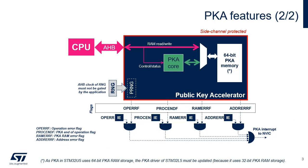PKA lightens the CPU workload by performing key operations in the PKA core using dedicated PKA memory. First, the CPU loads initial data into the PKA internal RAM, which is located at address offset 0x400. Then, in the PKA control register, the CPU specifies the operation which is to be executed and finally asserts the start bit.